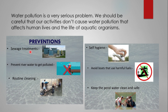The water can be treated in a way that cleans the dirt from it and makes it fit for domestic use — that is named as sewage treatment. Number two: prevent river water from getting polluted. Whenever you go to parks or other recreational activities, try to stop throwing things into water bodies — don't throw rubbish or litter into rivers or lakes adjacent to that area. Routine cleaning is shown here — that water bodies should be cleaned thoroughly after some time.